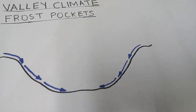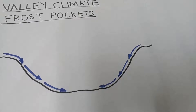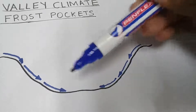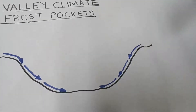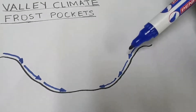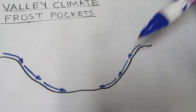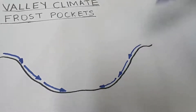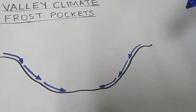They usually ask you questions like what are the negative impacts of these frost pockets, or how they form. Mostly they ask you about the effects. Let's get to the lesson. Frost pockets — as you can see in my diagram, I've already drawn the katabatic winds going down the slope. This is night time, when these frost pockets form.